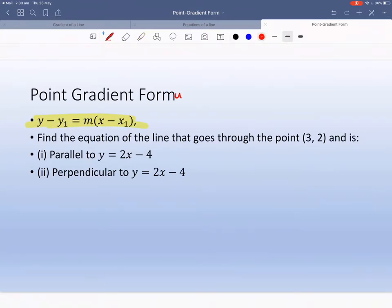Point gradient form formula: Y minus Y1 is equal to M bracket X minus X1, where M is the gradient just like before, and Y1 and X1 are just a point. X and Y just stay X and Y. So we'll see that as we do this example.